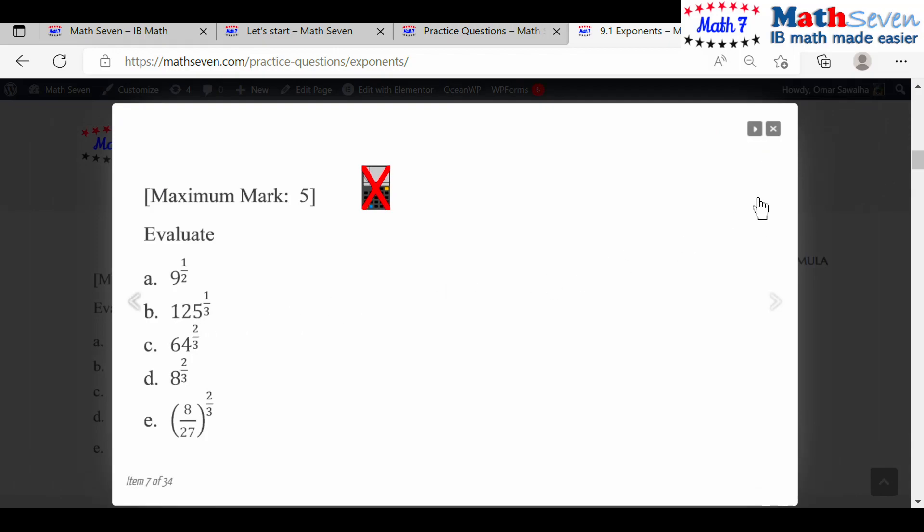Now, for part B, look at part B. 125. 125 is the same as 5 times 5 times 5. So it is 5 cubed to the power of 1 over 3. So this will become 5, 3 times 1 over 3 because power of the power we multiply. Now, 3 I write it as a fraction. They now multiply these fractions. This 3 and this 3 cancels out. You're left with 5.